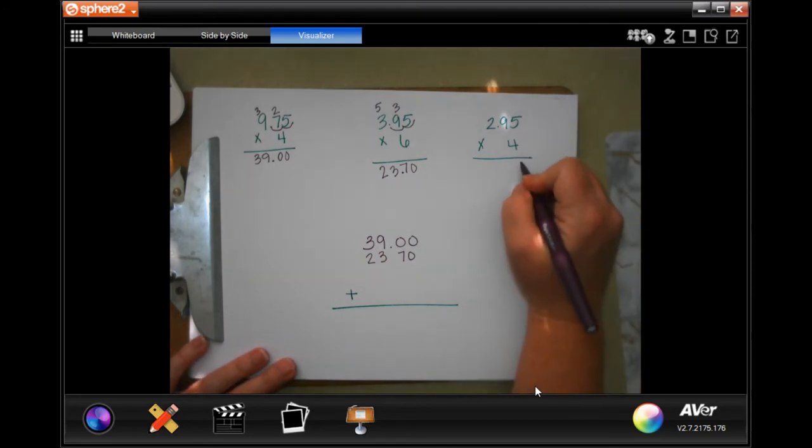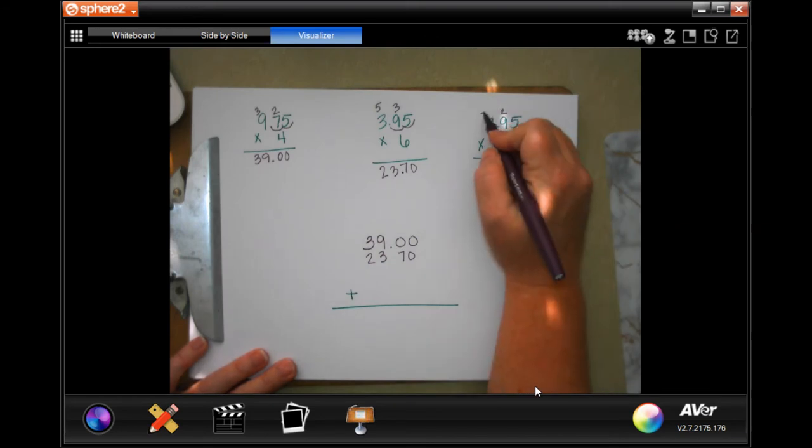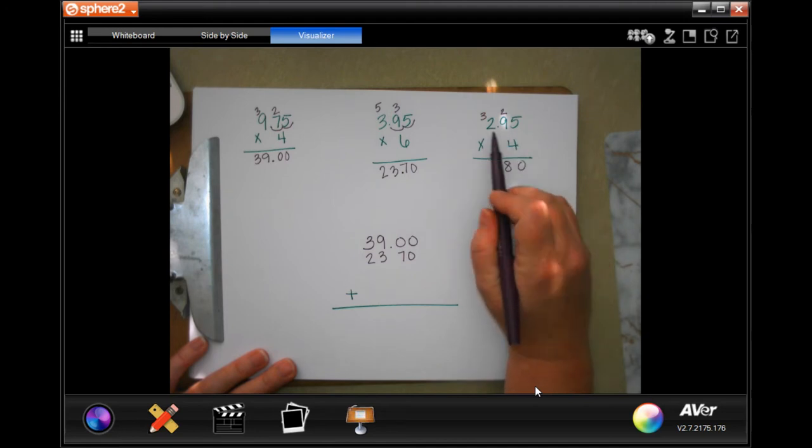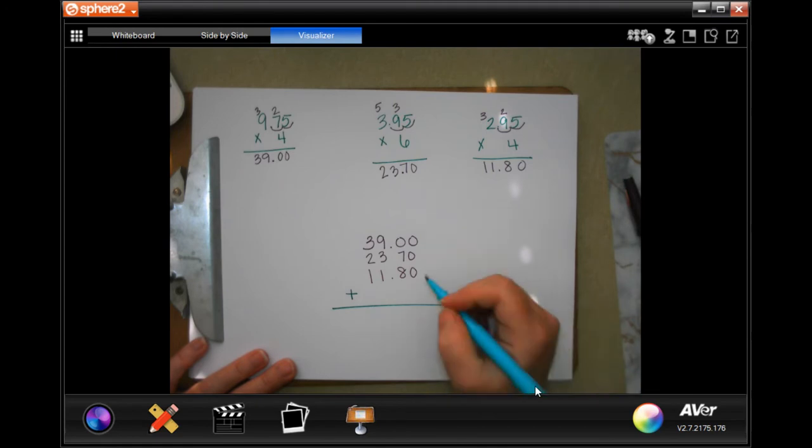Last one here. 4 times 5 is 20, carry our 2. 4 times 9 is 36, plus 2 is 38, carry our 3. 4 times 2 is 8, plus 3 is 11. We're going to go in 1, 2 places, 1, 2 places, that makes it 11, 80.